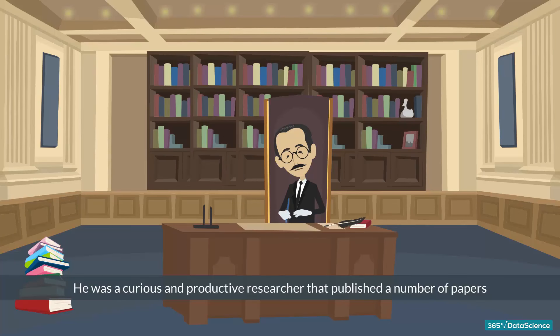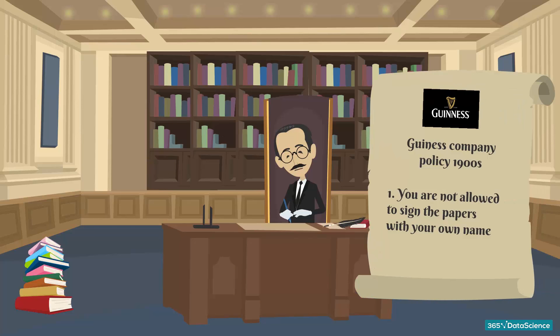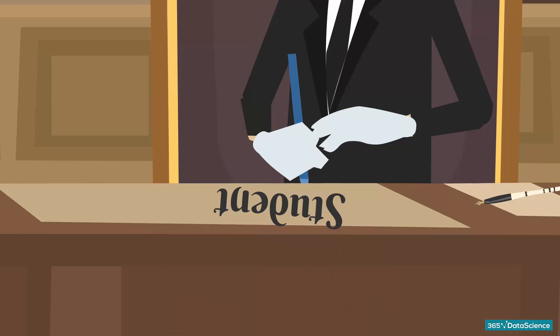He was a curious and productive researcher and published a number of papers that are still relevant today. However, due to the Guinness company policy, he was not allowed to sign the papers with his own name. Therefore, all of his work was under the pen name Student.